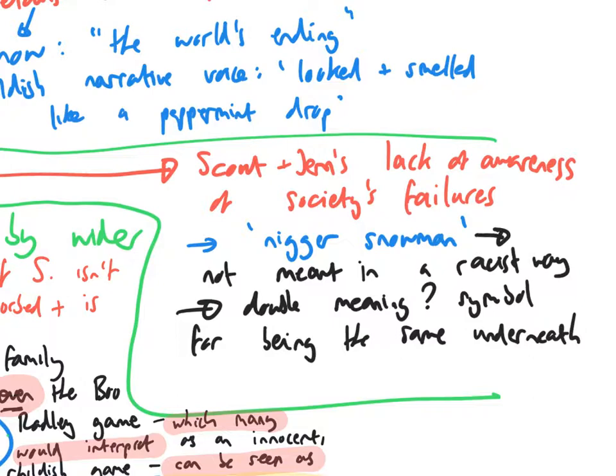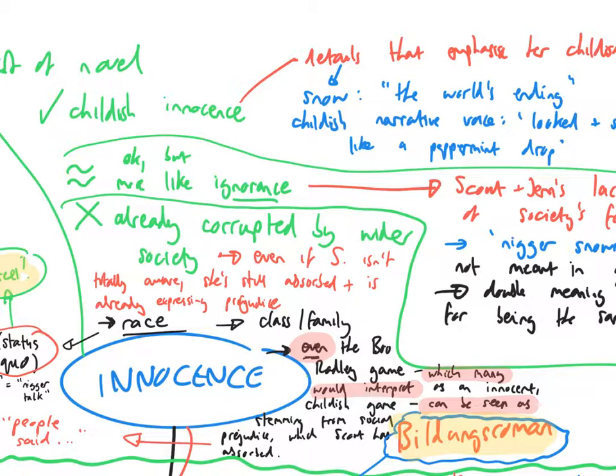In fact, as Hannah pointed out, there's a potential double meaning of the nigger snowman. It's symbolic for everyone being the same underneath. But moving on, there's a more convincing argument that no, Scout isn't really in a state of innocence because she has already been corrupted by the wider society. This is where the context points really come in.